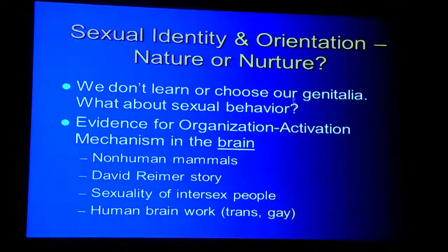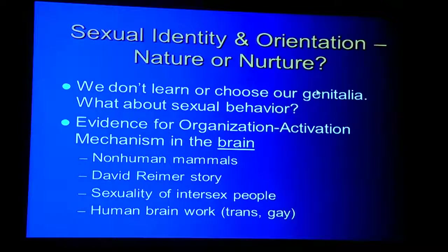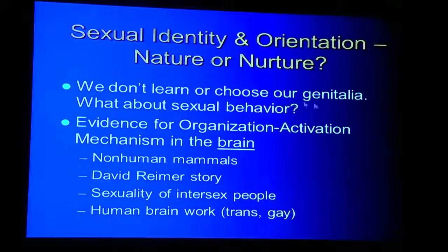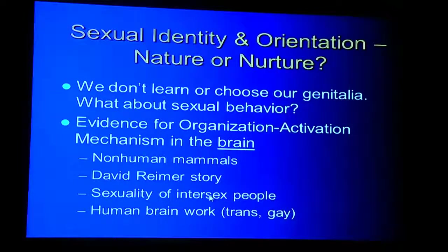It's clear we're born with our genitalia — we don't learn them and we don't choose them. But what about sexual behavior? Do we learn our sexual identity? Do we choose our sexual orientation? I'm going to give you four lines of evidence showing that the organization-activation mechanism works in the brain the same way it does in the genitalia — in people just like in all other animals. These four lines of evidence are the animal work, the David Reimer story, the sexuality of intersex people, and human brain work comparing trans and gay brains to those of typical males and females.